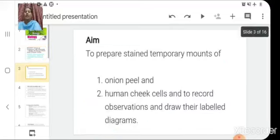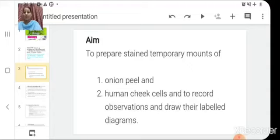So let us begin with this experiment. When we write experiment, the first thing is aim, and in this experiment the aim is to prepare stained temporary mount of onion peel cell. We will not write the second point that is human cheek cells. To record the observation and draw their label diagram.